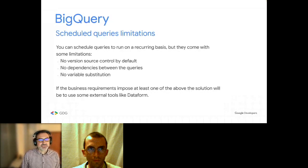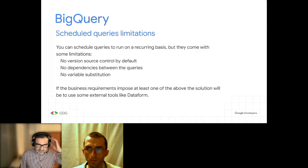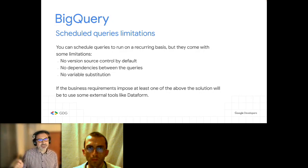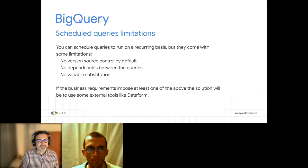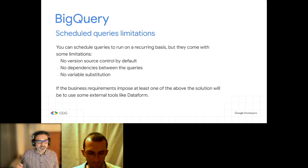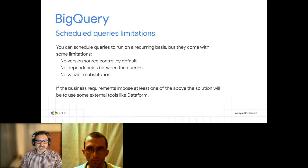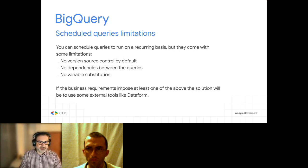Now, just to give a short introduction to Dataform — in BigQuery you can schedule some queries on a recurring basis, but they come with limitations: no version control, no dependency between queries, and no variable substitution. If business requirements impose at least one of the above, the solution would be to use an external tool like Dataform.